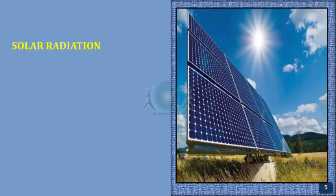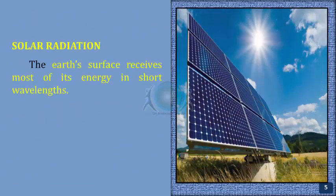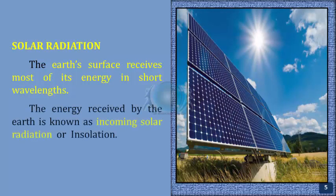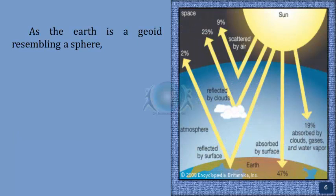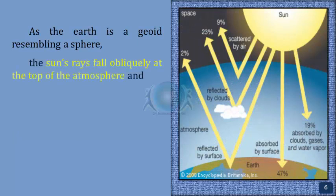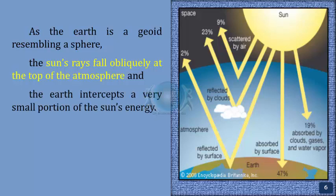Solar Radiation. The Earth's surface receives most of its energy in short wavelengths. The energy received by the Earth is known as incoming solar radiation or insolation. As the Earth is a geoid resembling a sphere, the Sun's rays fall obliquely at the top of the atmosphere and the Earth intercepts a very small portion of the Sun's energy.